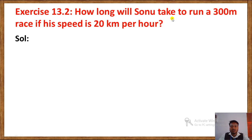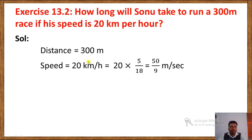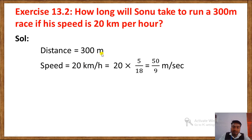Another example: how long will Sonu take to run a 300-metre race if his speed is 20 kilometres per hour? Distance is 300 metres and speed is 20 km/h. Before calculating, notice the distance is in metres but speed is in kilometres per hour, so we need to convert the speed into metres per second.